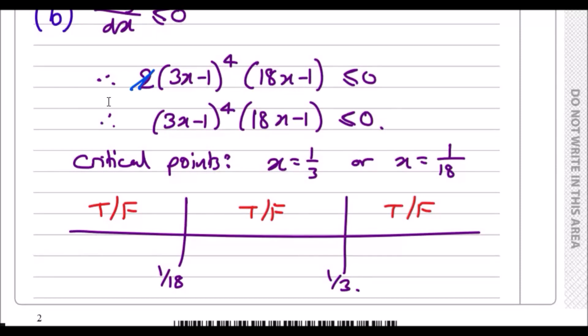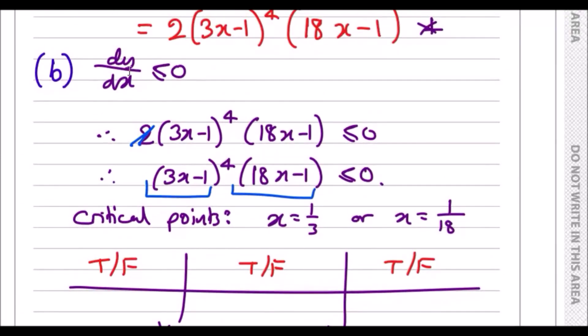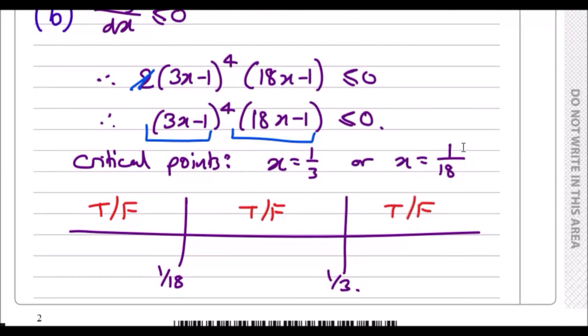Cancel out the 2 because dividing by 2 gives the same expression. I use a true and false technique. First find your critical points: when (3x-1) = 0, x = 1/3. When 18x-1 = 0, x = 1/18. These are value solutions.